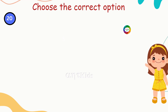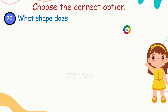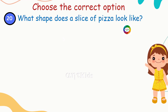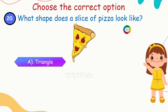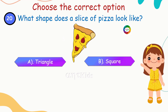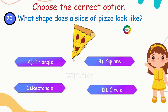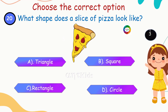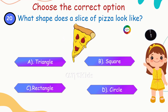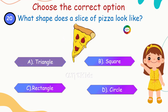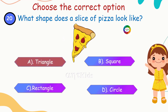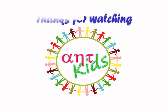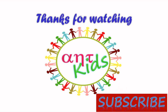Next question: what shape does a slice of pizza look like? Options are: triangle, square, rectangle, circle. Yes, you're right — the answer is triangle! Thanks for watching. Subscribe to Alphanumeric Tricks Kids for more videos. Thank you!